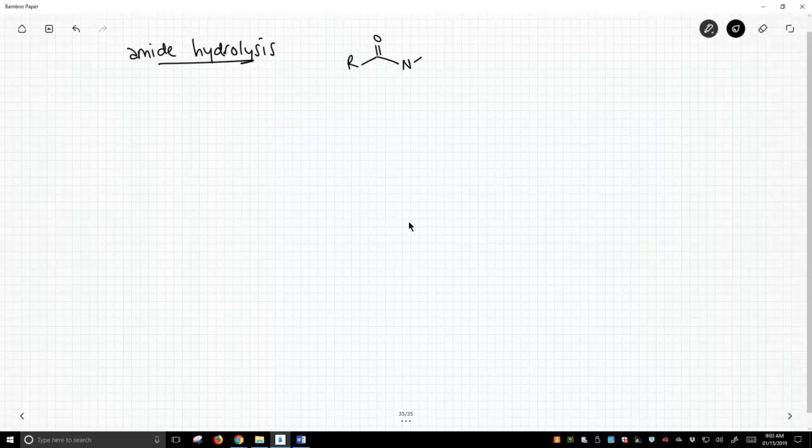I'm going to write the reaction in general. All these R groups do not have to be carbon groups. They can actually be hydrogens as well. It depends on the substitution of the amide. But if we treat this with water and sulfuric acid, like any acid derivative, we will get the carboxylic acid, and the final product will actually be an amine. We'll see some implications on whether this reaction is reversible or not, because we use an amine.